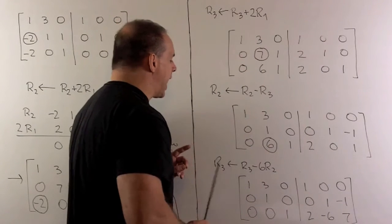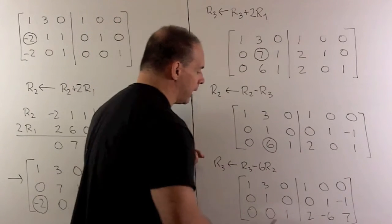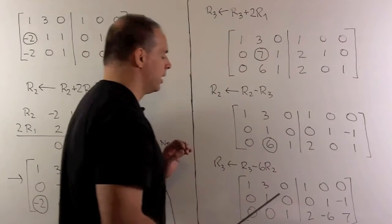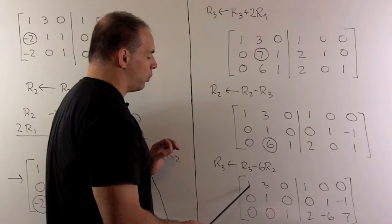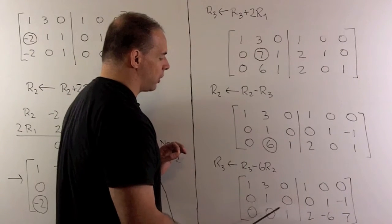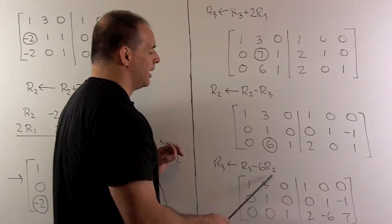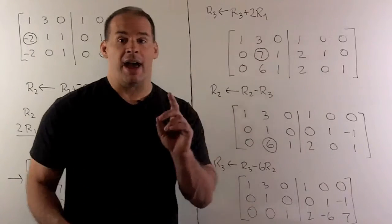So, we work it out, and that gets us to this augmented matrix here. Now, you'll note, we're almost done. I just need to take care of this 3. So, I have 1, 0, 0, 1, 0, 1, 0, 0, fix the 3, and then I have my inverse.